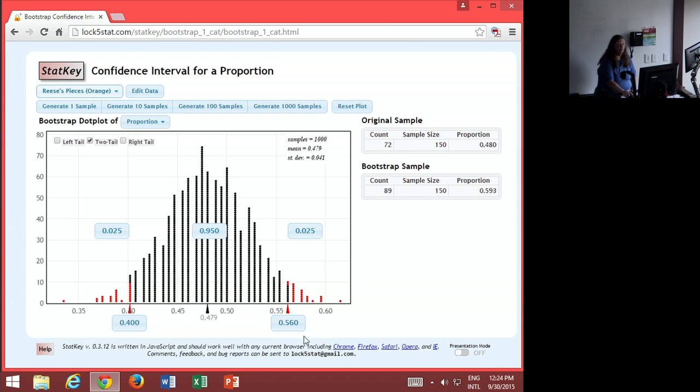And we cut off the 2.5% because 100 minus 95 is 5 divided by 2 is 2.5. Actually, from the 1000, we should have 25 red dots at the top and 25 red dots at the bottom. And our confidence interval would run from 0.4 to 0.560.